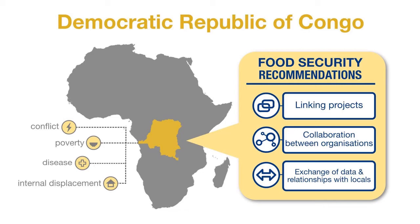We looked at regionally-based NGOs already established in each region and recommend the mVAM team to create collaborations with these organizations, as their infrastructure, safety regulations, and relationships with local government and populations are already in place. It's important to build a platform where you work with people on the ground through a trusting relationship. This would help NGOs by relieving them of data collection responsibilities, while the NGO would in turn provide support to the mVAM team during data collection.